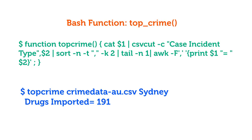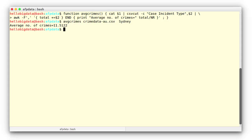Now we can slightly modify the above function so that it can also compute, given any city name, the average number of crimes. Here, everything remains as above, except there's no sort function, and the awk function computes the sum of crimes in column 2 and then divides the sum by the total number of rows, NR.